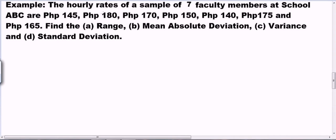The RD rates of a sample of 7 faculty members at school ABC are 145, 180, 170, 150, 140, 175, and 165.